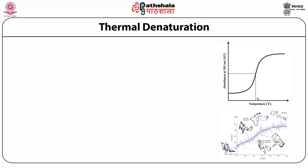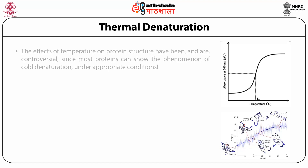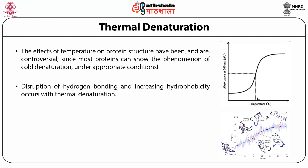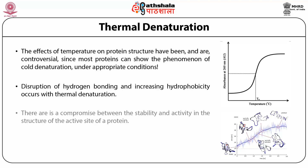We discuss thermal denaturation. As you increase the temperature, optical properties increase, and this tendency is used to estimate the thermodynamic properties of the protein. You can see how the structure and conformation of the protein changes as temperature increases, and how the protein starts unfolding from lower to higher temperature. The effect of temperature on structure can be directly used for estimation of Gibbs free energy. Increasing temperature causes disruption of hydrogen bonding and increasing hydrophobicity. There is a compromise between stability and activity — as you increase the temperature, activity is lost and structure is lost.